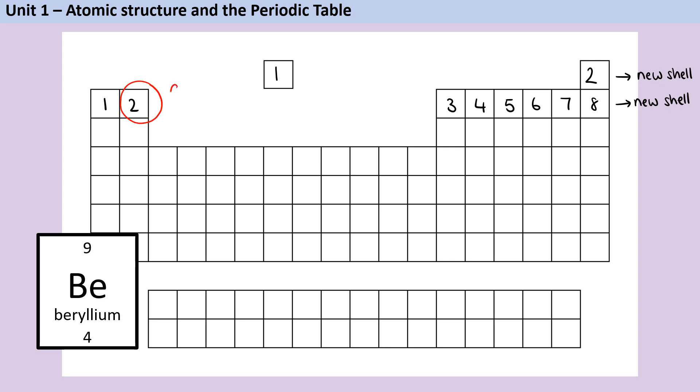Beryllium in the periodic table belongs in group two and that means it must have two electrons in its outer shell and that will be true for anything in group two. That's also true for all of the other groups so if something is in group seven it must have seven electrons in its outer shell and so on.